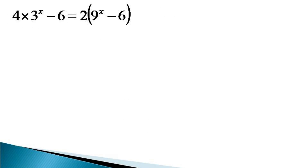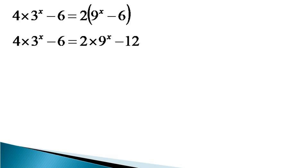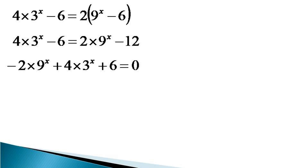We multiply the 2 into the terms in the bracket on the right hand side to get the right hand side as 2 times 9 raised to the power x minus 12. Bringing all terms to the left hand side, the equation becomes minus 2 times 9 raised to the power x plus 4 times 3 raised to the power x plus 6 equals 0.